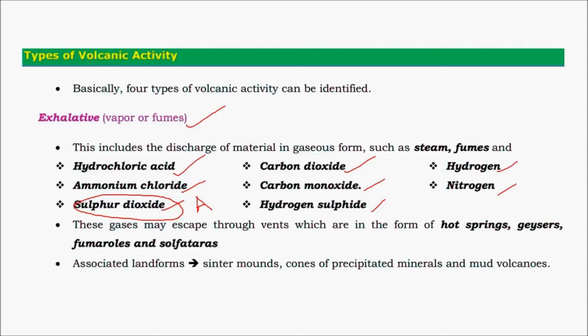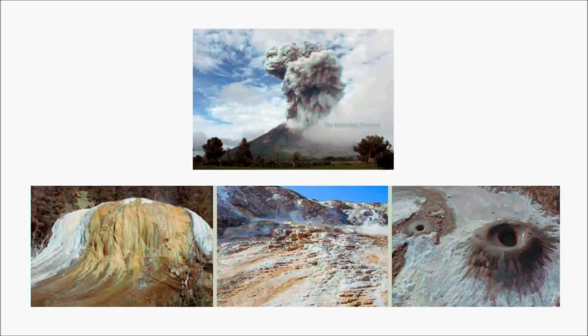Huge volcanic eruptions can lead to increased acidity in both rainwater and ocean water. Exhalative volcanism is expressed mainly through geyser springs, fumaroles, and sulfataras. The associated landforms include sintamounts and mud volcanoes. When vapors containing minerals are erupted, these distinctive landforms are formed, and the activity mainly throws out gases and dust.